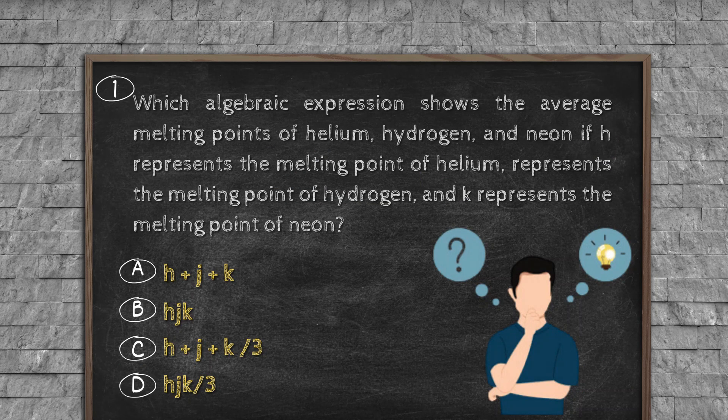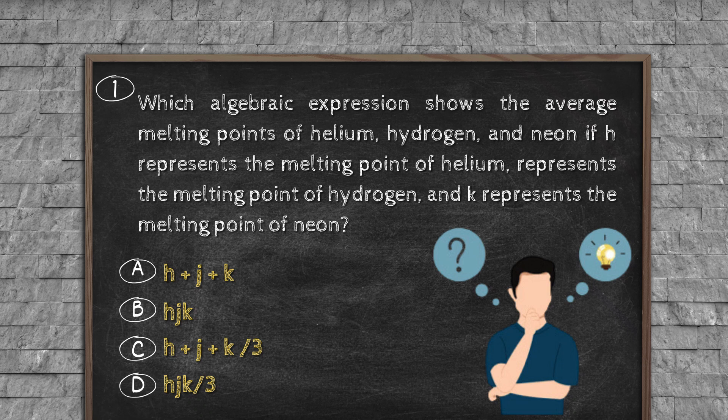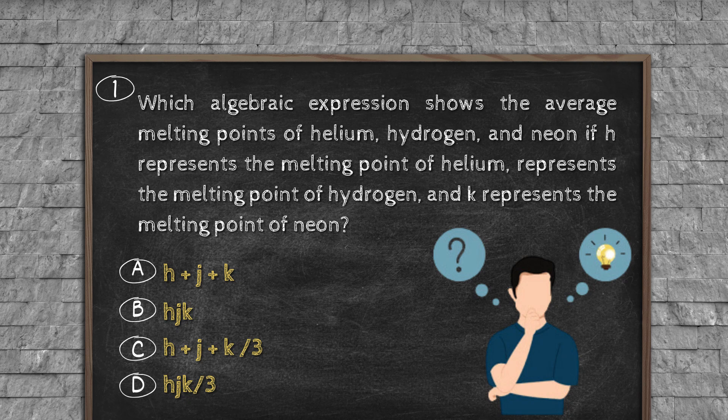Question number one: Which algebraic expression shows the average melting points of helium, hydrogen, and neon if H represents the melting point of helium, J represents the melting point of hydrogen, and K represents the melting point of neon? Option A: H + J + K. Option B: HJ. Option C: (H + J + K)/3. Option D: HJK/3.